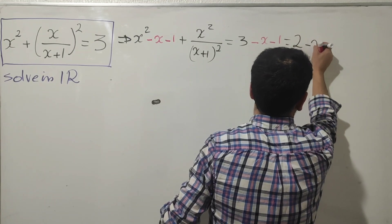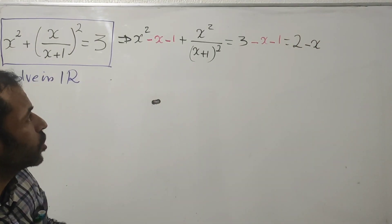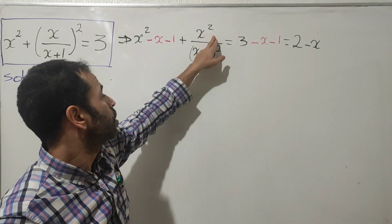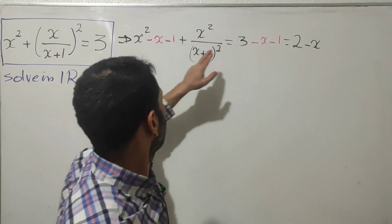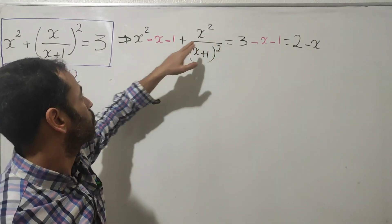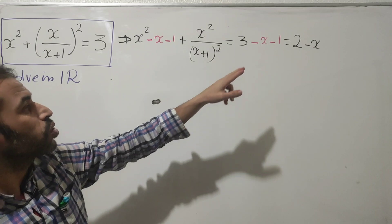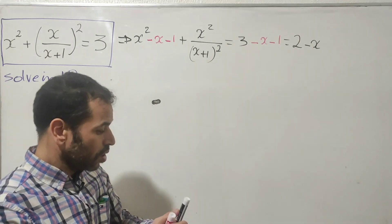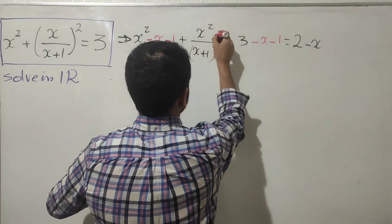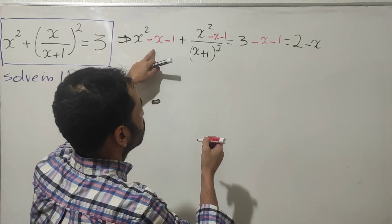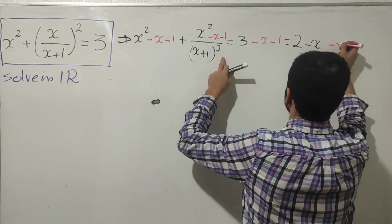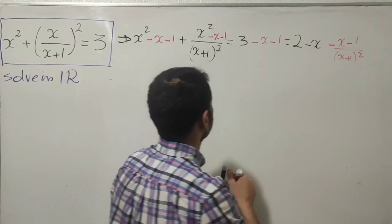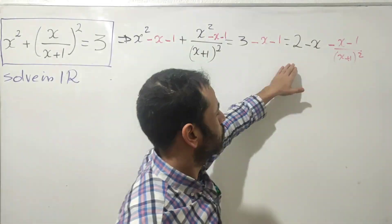I'm going to use another trick: I add another minus x minus one next to the previous one, and also add it on the right side. I will see that both terms appear as the same — x squared minus x minus one. On the right-hand side we will have the same thing, which will help us to factor. I also add minus x minus one over x plus one, and leave the squared term as is.